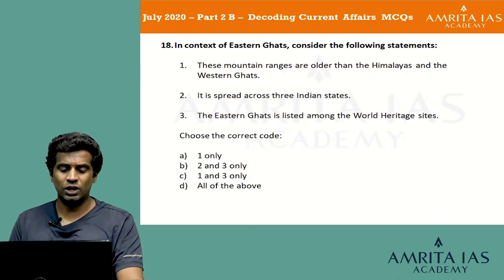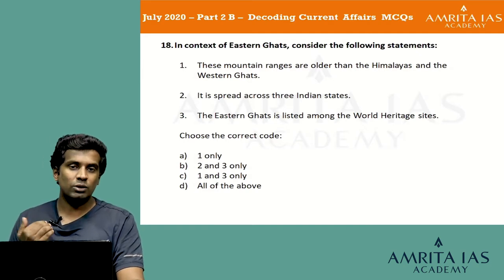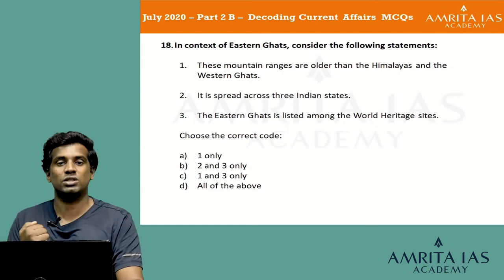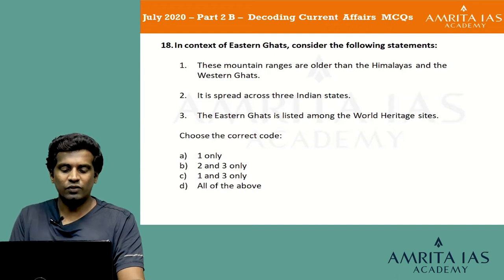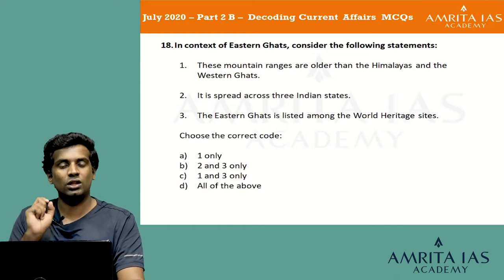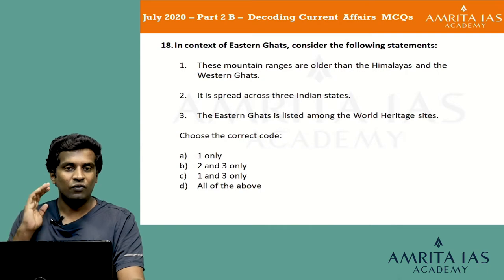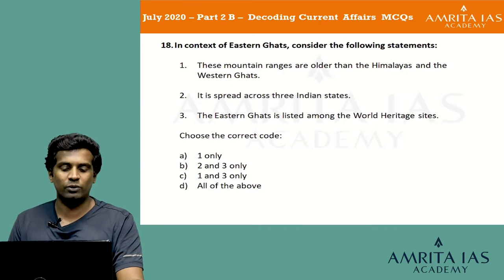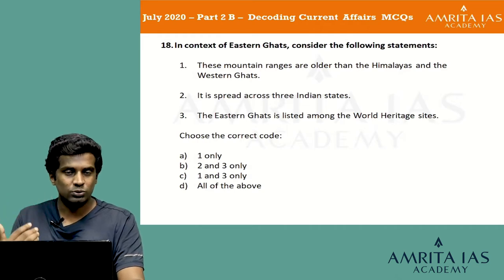Looking at the third statement — the Eastern Ghats is listed among the World Heritage sites — while learning about World Heritage sites in India, we know the Eastern Ghats is not listed among them. So the third statement is wrong, eliminating options B, C and D, leaving only option A: 1 only. Additionally, the second statement is also wrong — the Eastern Ghats is not restricted to 3 Indian states but spreads over more states.